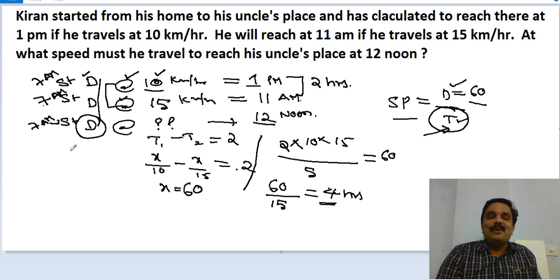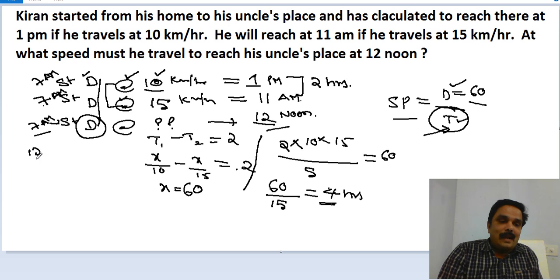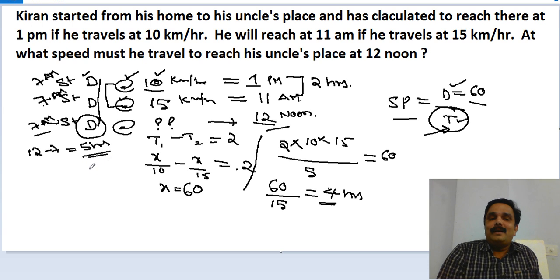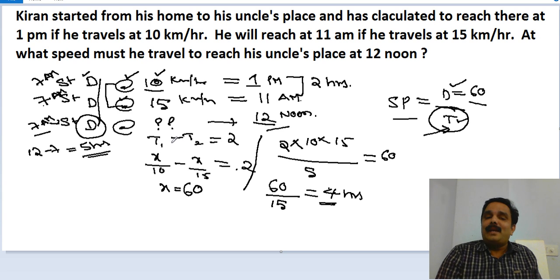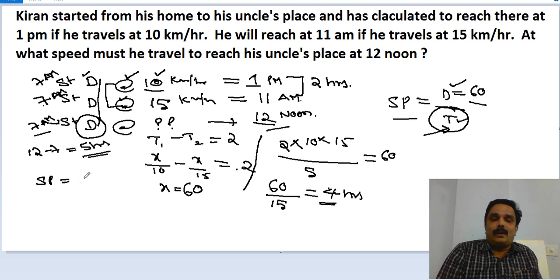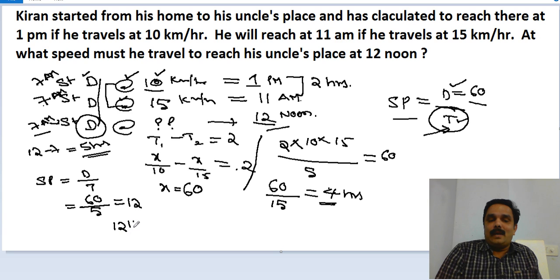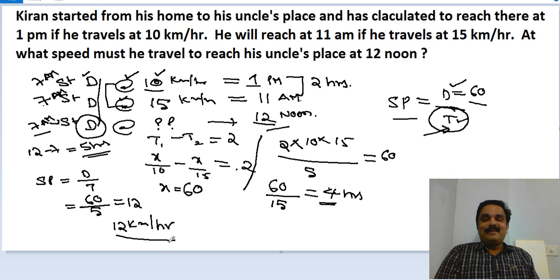Now the starting time is 7 a.m. and the ending time should be 12 noon. So he has to travel for 12 minus 7 equals 5 hours. This 5 hours is the time to be taken to travel at some speed. Speed equals distance divided by time: the distance is 60 and the duration is 5 hours. So the answer is 12 kilometers per hour.